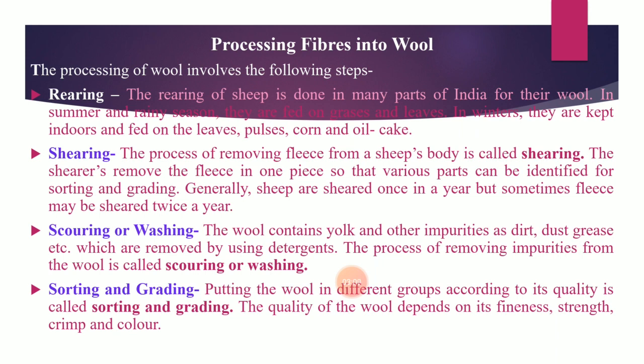Shearing is the process of removing fleece from an animal's body. The person who removes fleece is called a shearer. The shearer removes the fleece in individual pieces so that each piece can be identified for sorting and grading, since sheep have the best quality wool at their shoulders and sides. Generally, shearing is done once a year, but sometimes it may be done twice. Scouring or washing is the process of removing dirt, dust, grease, etc., from the wool fiber.